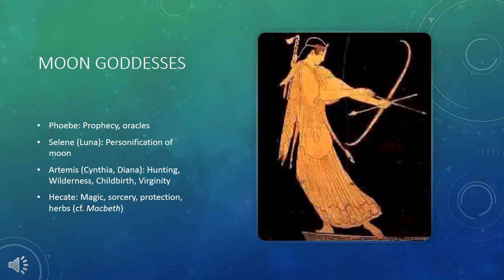Finally, there is the goddess Hecate, whom we saw mentioned in Macbeth. She is a more mysterious goddess associated with magic, sorcery, protection, various herbs and poisons, and some darker things. She is really a sort of older goddess that dates to pre-Greek mythology and is associated with the moon and its very magical, mysterious effects. All of these goddesses are figures associated with the moon, and whenever Shakespeare used the image of the moon, audiences would likely think of these various characters.